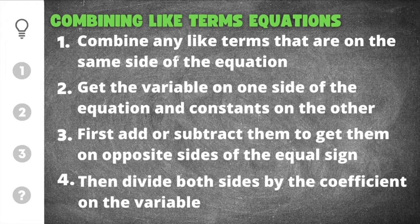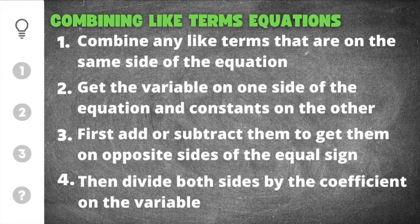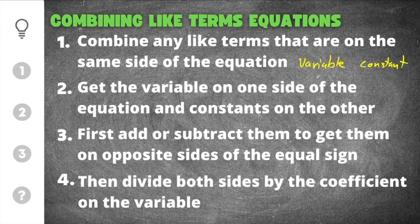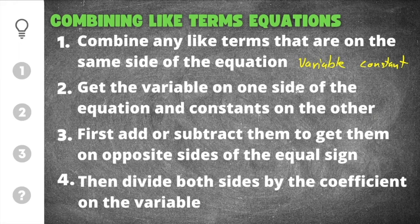There are four important things that we need to remember when solving equations with combining like terms. The first step is to combine any like terms that are on the same side of the equation. A like term is any term that has the same variable or is a constant. A variable is just a letter that represents a number, and a constant is just a number. So all numbers are like terms and you can combine them, and any variable combination that is the same as another term, you can combine together.